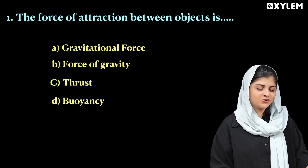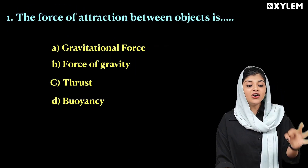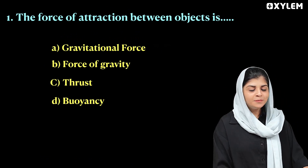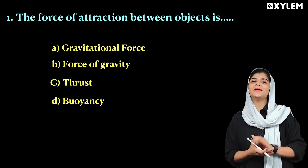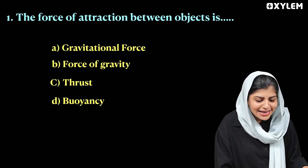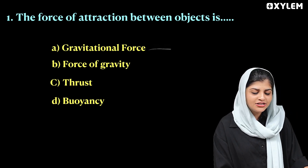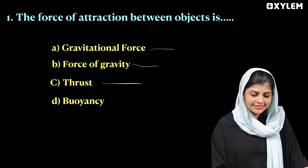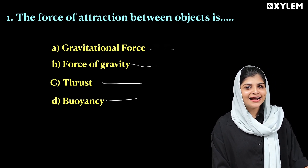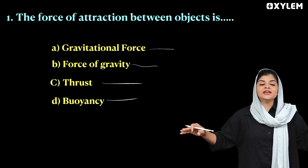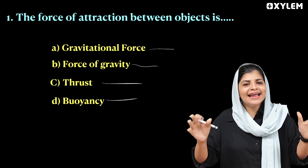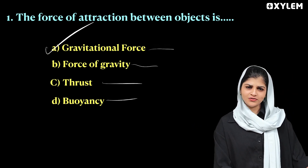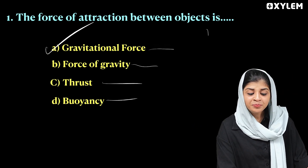This is your first question: The force of attraction between objects is known as? We have four options: Gravitational force, force of gravity, thrust, and buoyancy. Every object in the universe attracts each other, and that attractive force is known as Gravitational force. Very simple, easy.